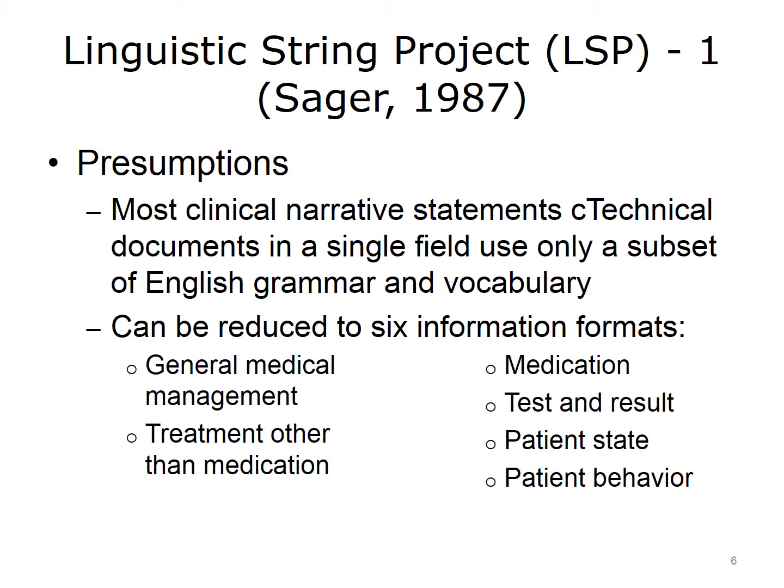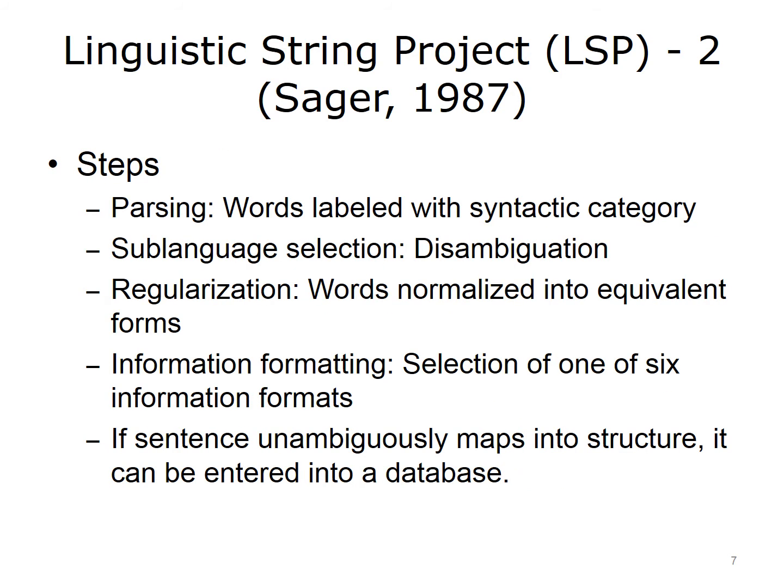The six information formats were: general medical management, treatment other than medication, medication, test and results, patient state, and patient behavior. The system went through a number of steps that would aim to take clinical language and map it into the meaning encoded in these information formats.